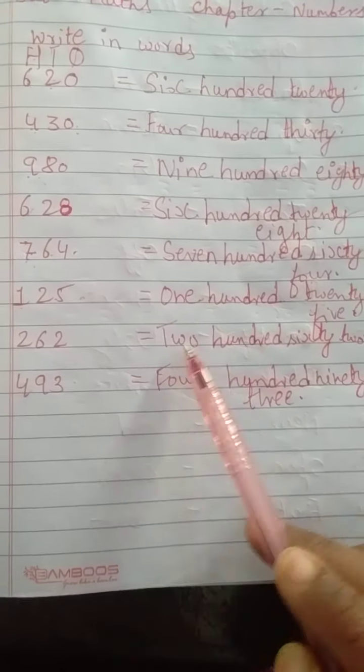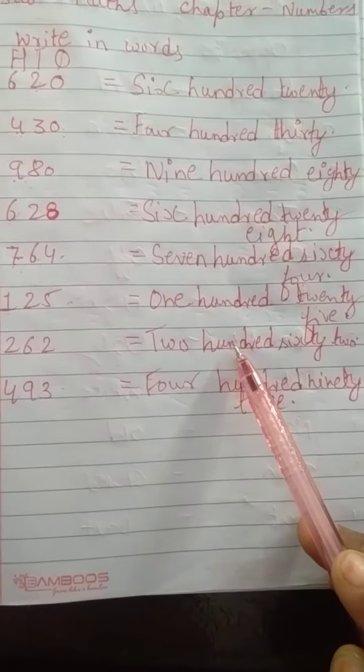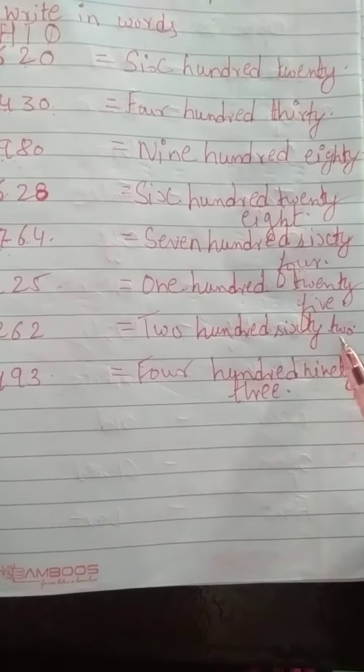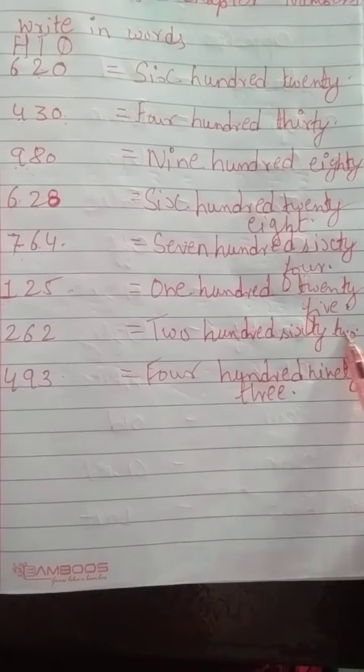Next is 262. So, T-W-O 2. H-U-N-D-R-E-D 100. S-I-X-T-Y 60. T-W-O 2. 262.